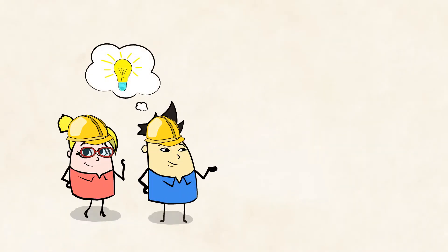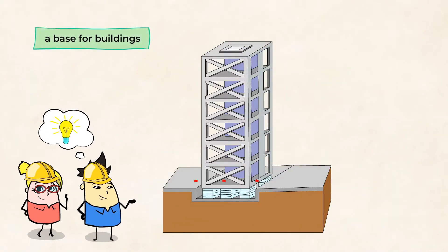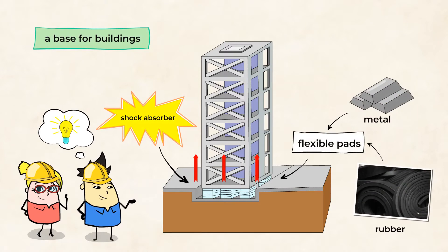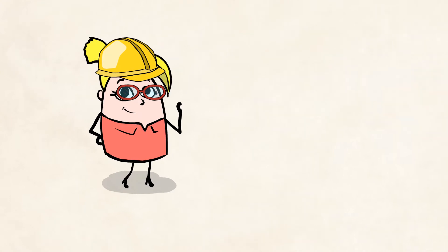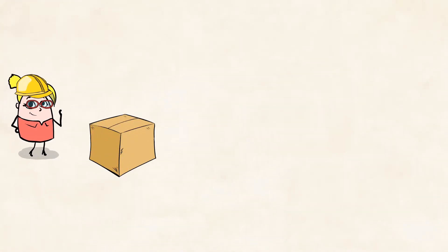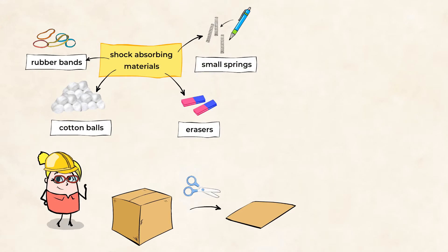One solution engineers have come up with is to create a base for buildings that will absorb the movement of an earthquake. Let's try this out using the following materials. A cardboard box to serve as our building, as well as a square piece of cardboard that will be the base. Let's gather various shock-absorbing materials such as rubber bands, cotton balls, erasers, even small springs from the inside of a pen.